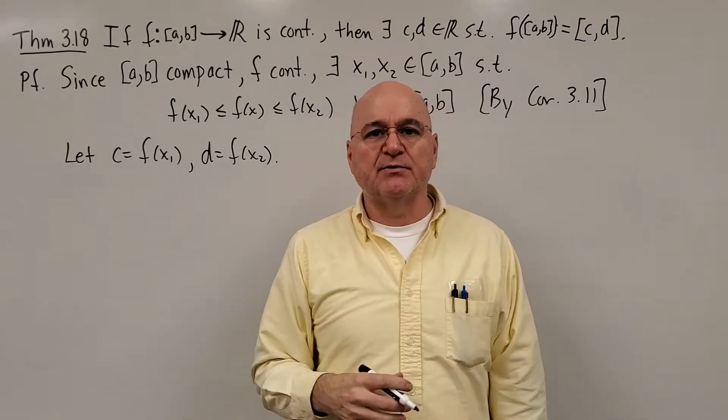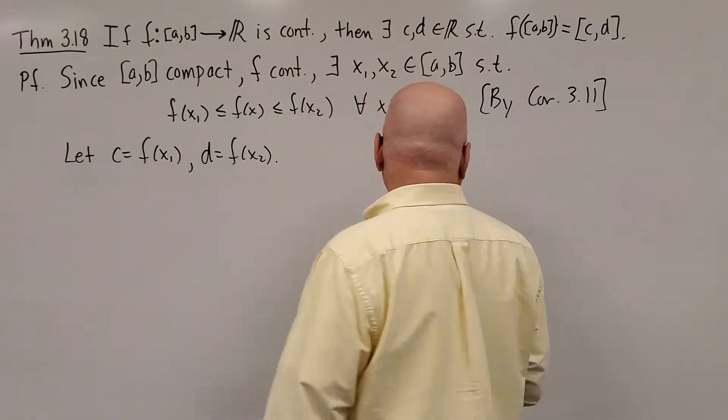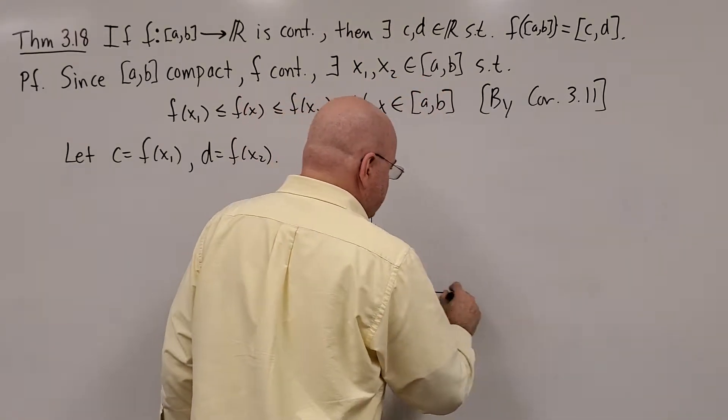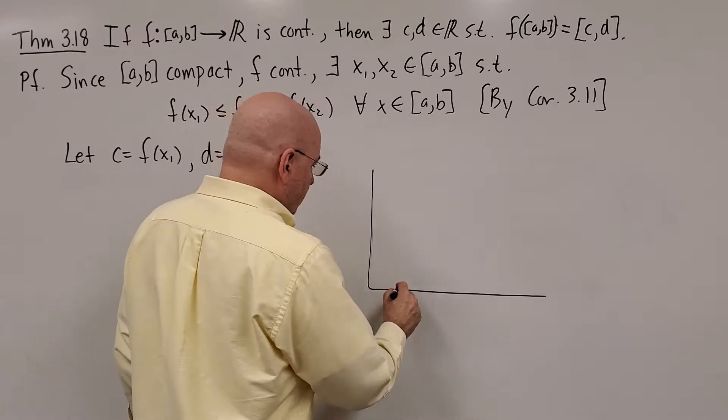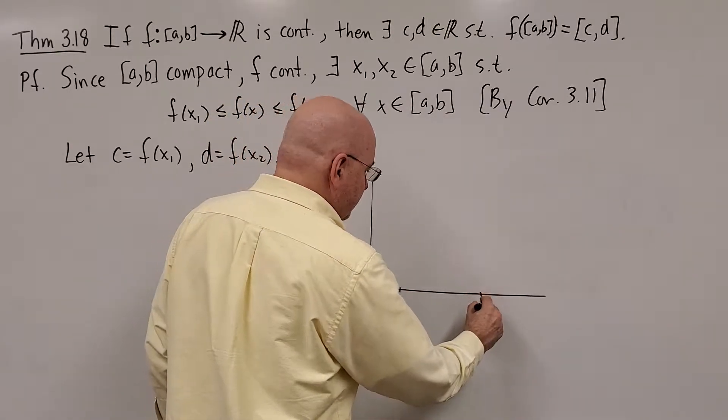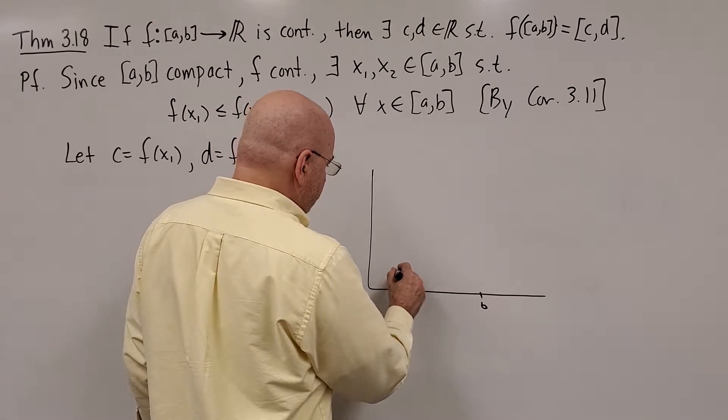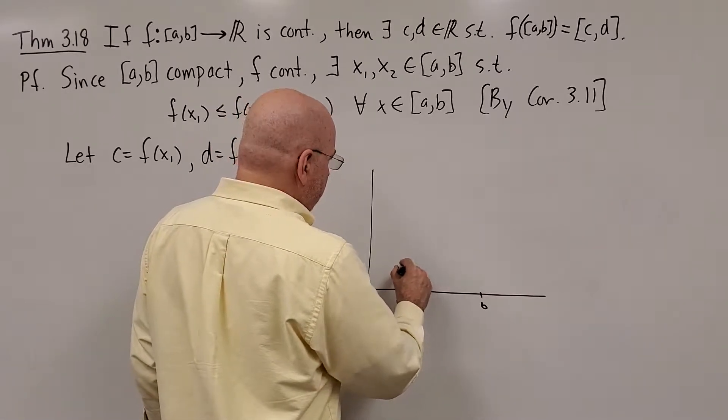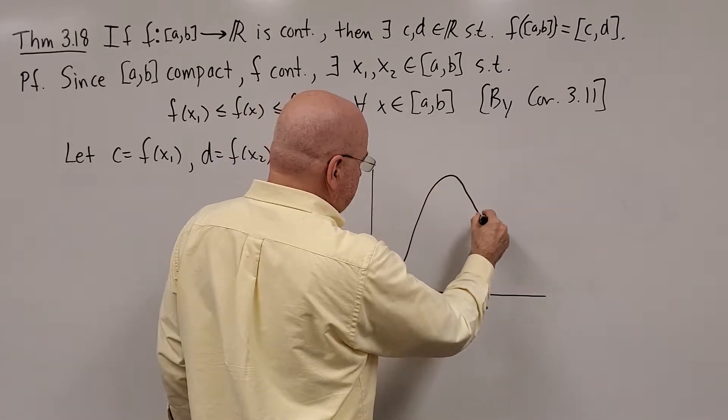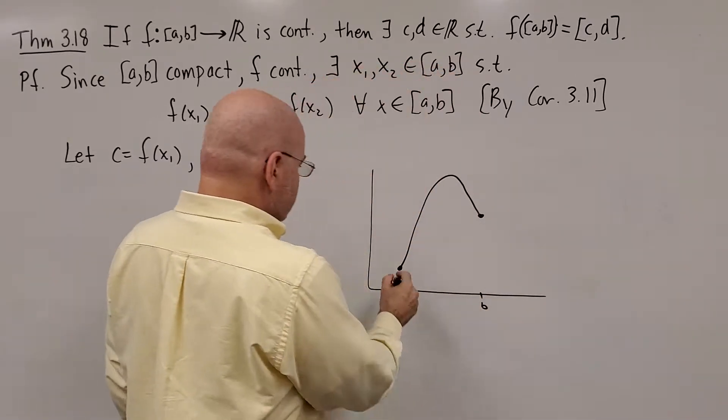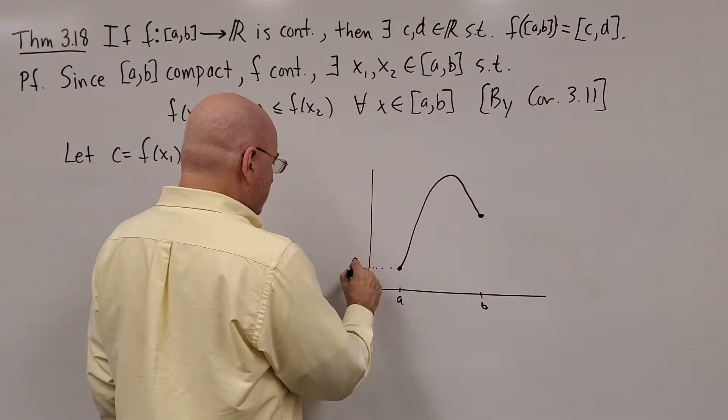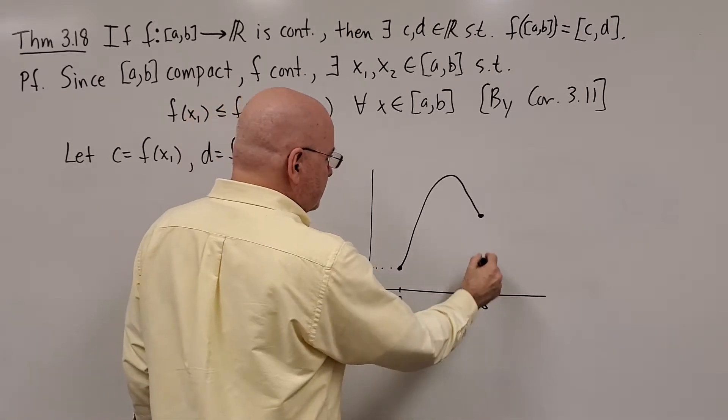Just a very simple example would be this is A and this is B and the function is defined from A to B, and we take something like this as being the function. So this is F of A and this is F of B.